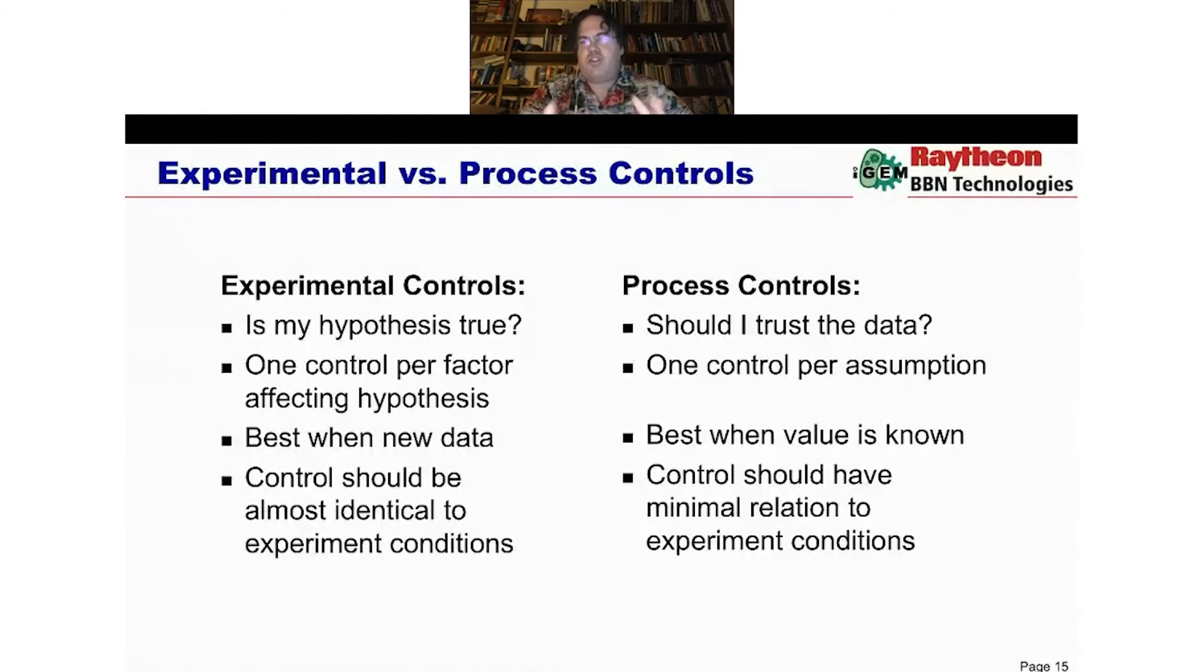Now, you have to actually be measuring things with good units and the right statistics to even be able to do this, but if you've got those. Now, I want to make sure that you understand the idea of process controls as separate from experimental controls, because we don't talk about process controls very much, but they're a very important thing of making things work right, especially with something as complicated as biological experiments. Usually when we talk about controls in experiments, we're talking about the experimental controls that let you ask the question, is my hypothesis true? Process controls are a different set of controls that you should also run, which asks a question about, should I trust this data or not?